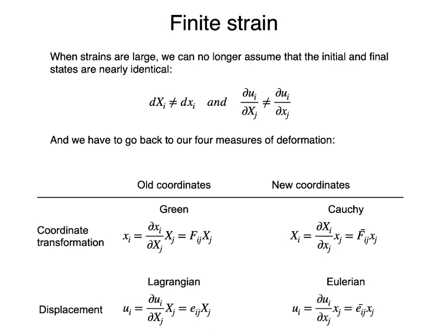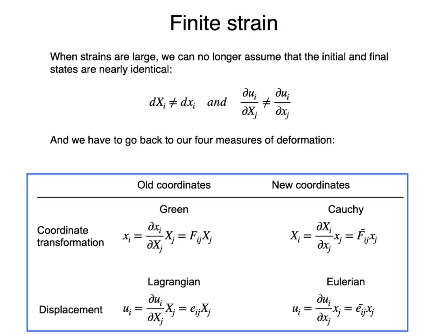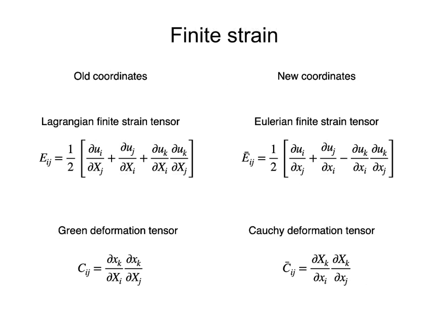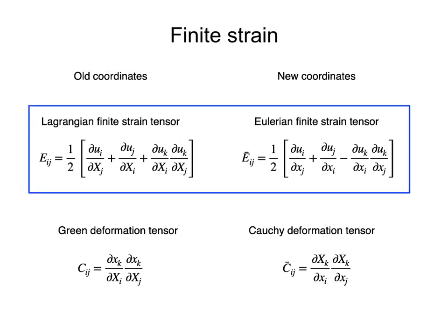Finite strains are strains larger than 1%. When strains are this large, we can no longer assume that the initial and final states are identical. Therefore, we need to go back to our four measures of deformation as described in this table. The mathematics of finite strain is more difficult than the mathematics of infinitesimal strain. We can define finite strain tensors as a function of the displacement gradients in the undeformed or deformed states. These are called the Lagrangian and Eulerian strain tensors, respectively. Note that the difference of these finite strain tensors with respect to the infinitesimal strain tensor is the third term in these equations.